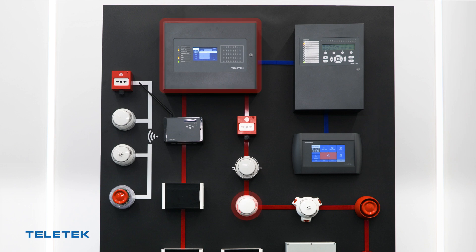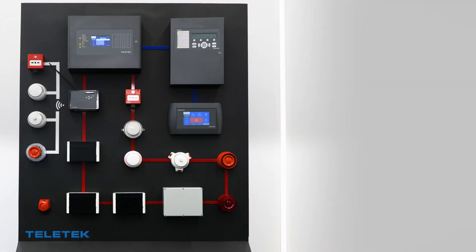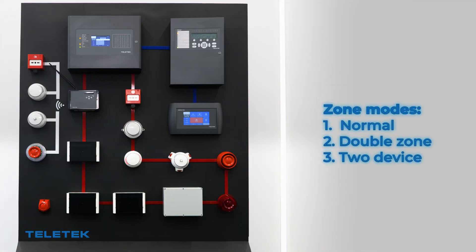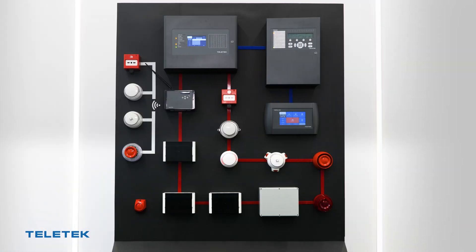Our fire alarm systems support two more zone modes: Double Zone and Two Device. Both modes are used in cases when we need protection against false alarms in our system. But what is the difference?